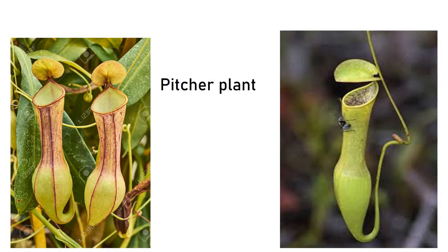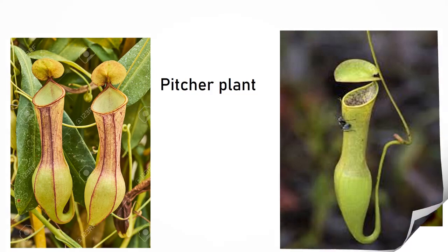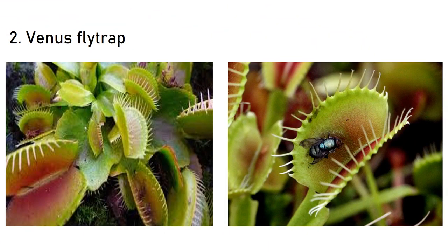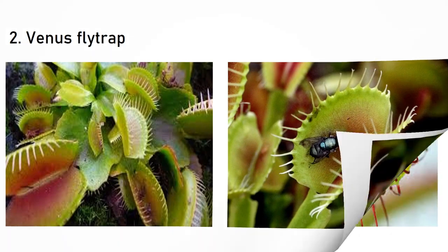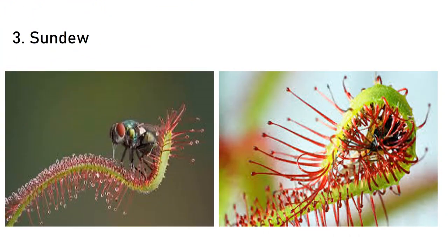This is the pitcher plant — you can see the shape as well as the lid at the top. The second example is Venus flytrap. You can see clearly that these structures close when any fly gets trapped. The third example is Sundew. This plant is also an insectivorous plant.